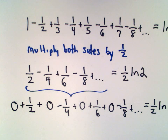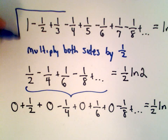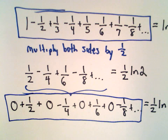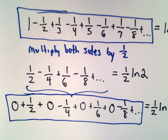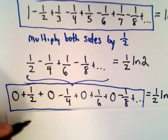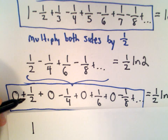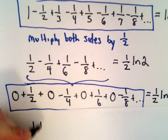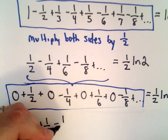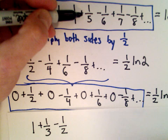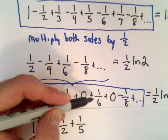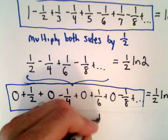Now I'm going to add my original alternating harmonic series with this new series and see what happens. When we add them together, one plus zero is one. The negative one half and the positive one half cancel. One third plus zero is positive one third. Negative one fourth plus negative one fourth gives us negative one half. One fifth plus zero is positive one fifth. Negative one sixth plus positive one sixth cancels. One seventh plus zero is positive one seventh.